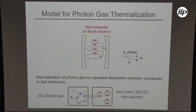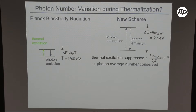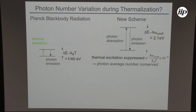The next question is: is there photon number variation during thermalization? In Planck's blackbody radiation, thermal excitation and emission create and destroy photons — that's precisely why in a blackbody the photons go away as you cool down. In our new scheme, we have a low-frequency cutoff at about 2 electron volts, the energy of visible spectral range photons, and quantized electronic levels of the dye. Because of that, thermal excitation is suppressed by a factor e to the minus ℏω_cutoff divided by k_B T, giving about 10 to the minus 6. So every time you see an emission of a photon, you know for sure there must have been an absorption event before — during thermalization, only the energy varies but not the average photon number.